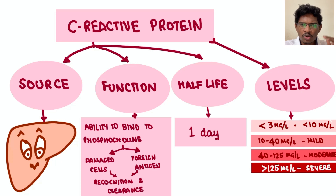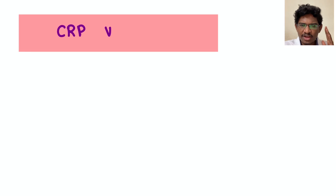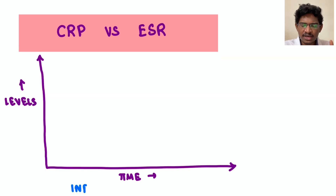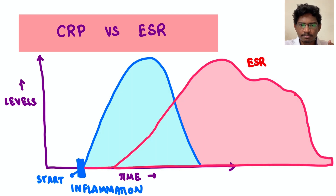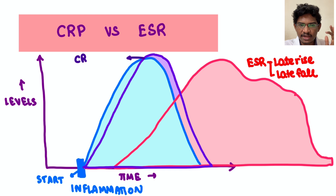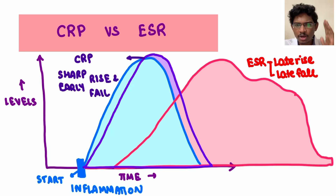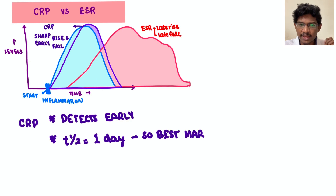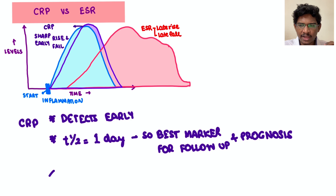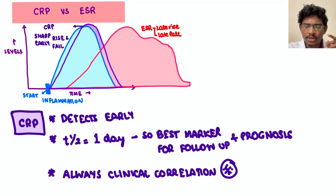How does CRP differ from ESR? Whenever inflammation starts, ESR rises very slowly, plateaus, and has a late fall. With CRP, it detects inflammation early, coincides along with inflammation, and falls along with it — making it the best marker. Since its half-life is only one day, it offers the advantage of follow-up: you can see how the patient is responding to treatment within 2-3 days and prognosticate accordingly. Most importantly, always correlate clinically with the patient. If saturation is fine and the 6-minute walk test is fine, don't intervene much. Don't just rely on lab values alone.